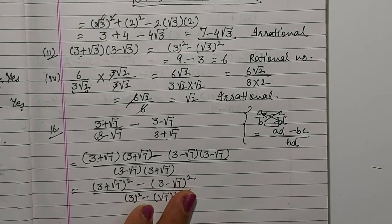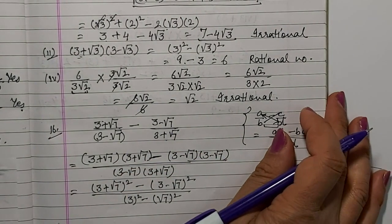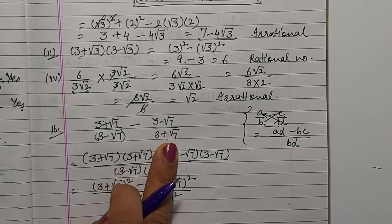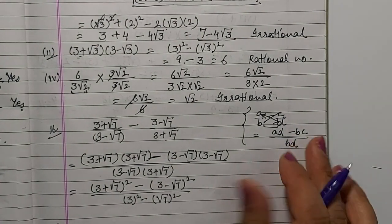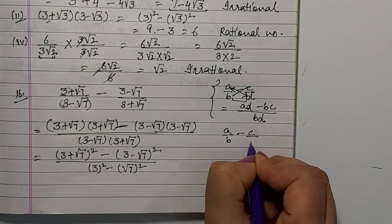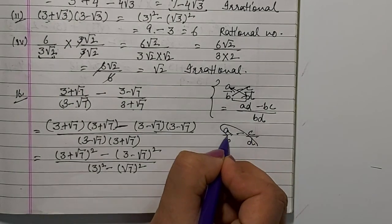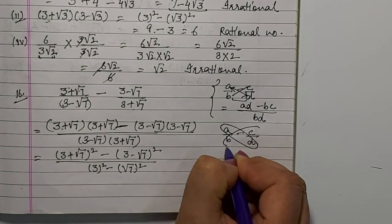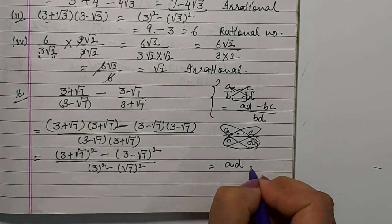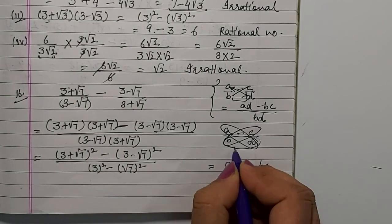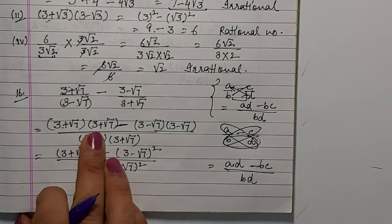16th question: simplify 3 plus root 7 over 3 minus root 7 minus 3 minus root 7 over 3 plus root 7. When you don't know the LCM of two denominators being added or subtracted, use this method: if you have a over b minus c over d and don't know the LCM, simply get the cross products. Multiply to get a×d minus b×c divided by b×d.